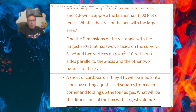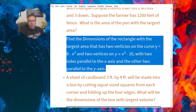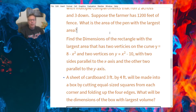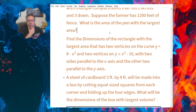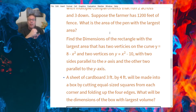Specifically, the problem that I want to talk about is right here. I want to find the dimensions of the rectangle with the largest area that has two vertices on the curve y equals 8 minus x squared and two vertices on the curve y equals x squared minus 10.